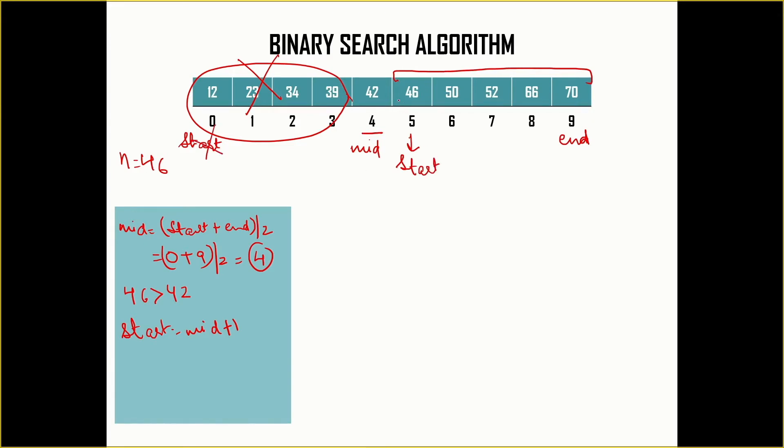Now the element will be searched from this part of the list. We again start with the procedure of calculating the middle point. This time it is mid equals start which is at 5 and end is at 9, and we calculate this and we get 7.